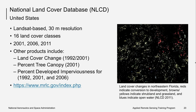The NLCD products include land cover type, percent impervious surface, and percent tree canopy cover at a 30-meter spatial resolution for the U.S. The database is available for 1992, 2001, 2006, and 2011, and is created using a 16-class classification scheme. It is primarily based on Landsat data, along with other data sources such as topography, census data, agricultural statistics, soil characteristics, wetlands, and other land cover maps. The data are freely available at the website listed here.